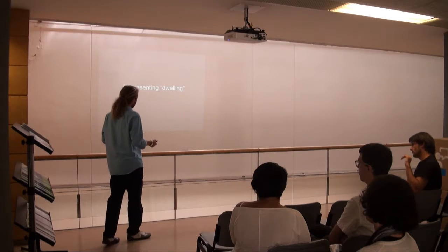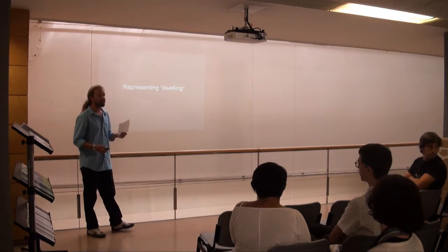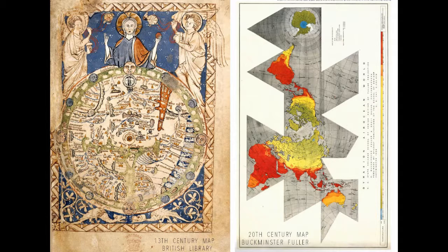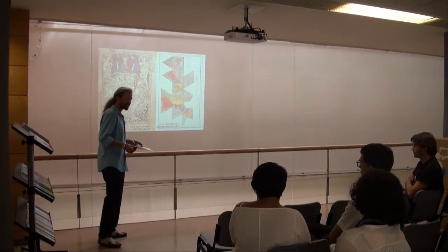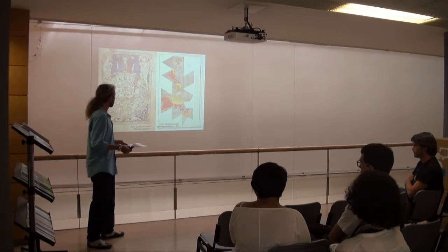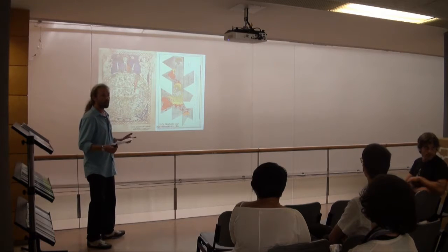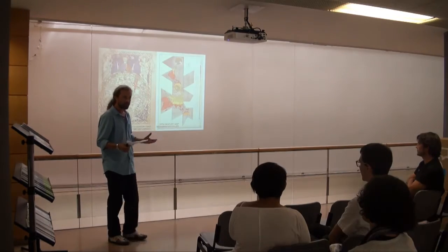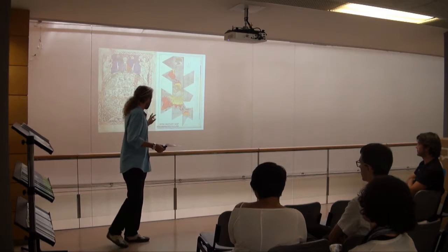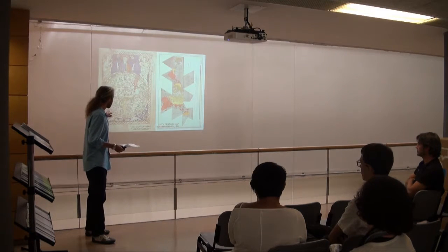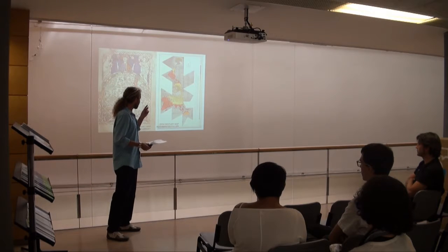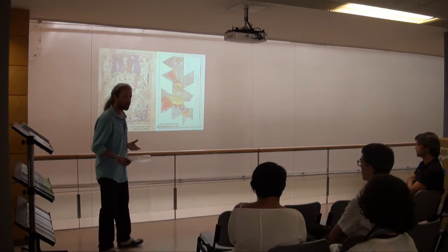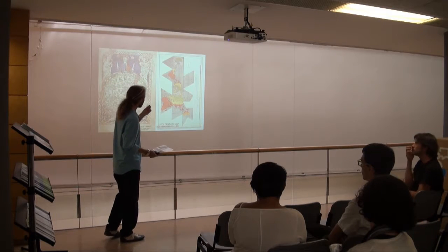How do we represent dwelling? I put up here two maps, because I think it's very important that we start thinking of representation — thinking of drawings from the architect's perspective — as a way of creating a vision of one's environment, a vision of the world, or of a smaller space. One map is from the 13th century on the left, and the other is by Buckminster Fuller.